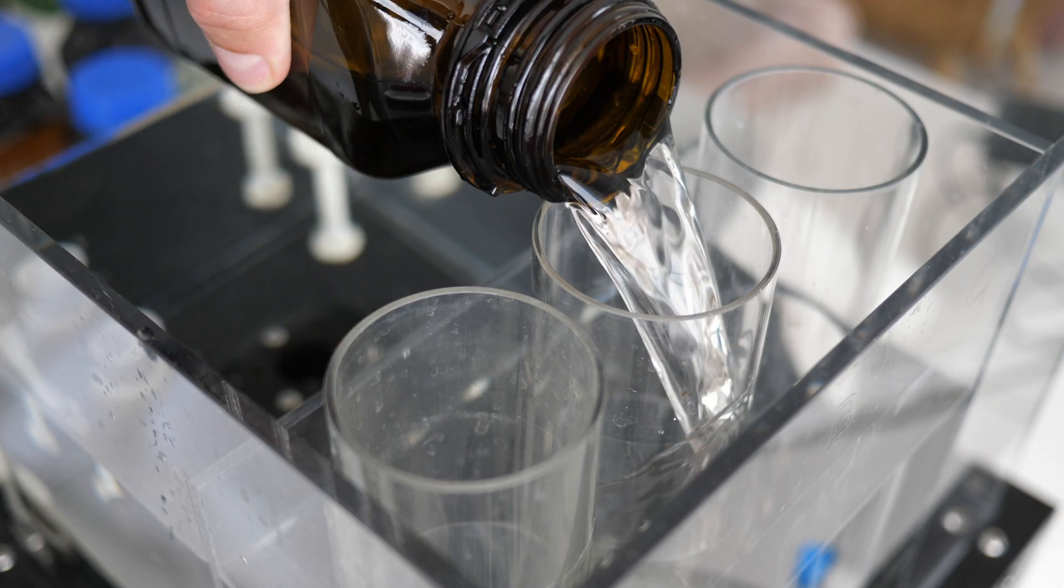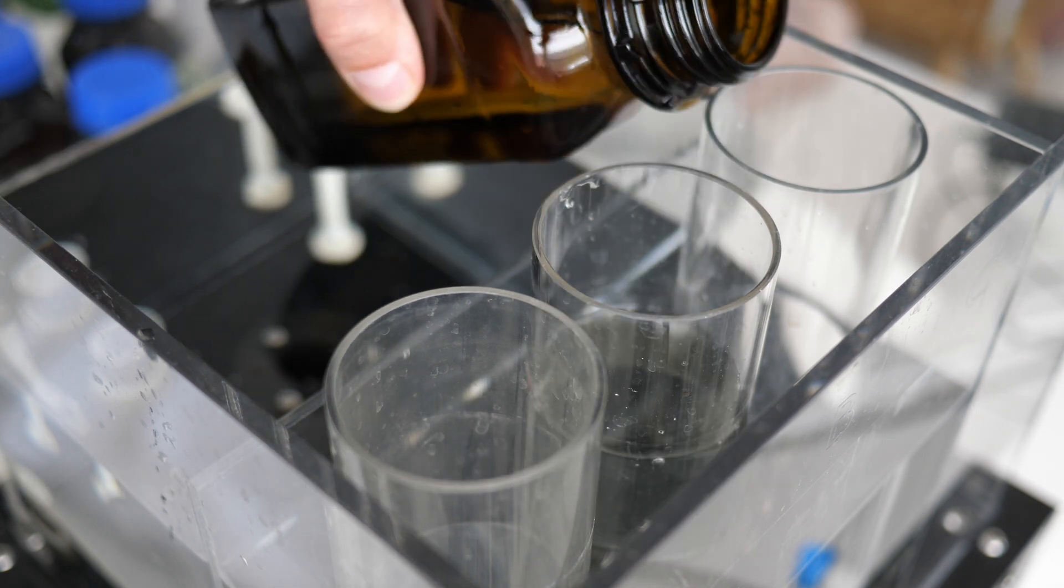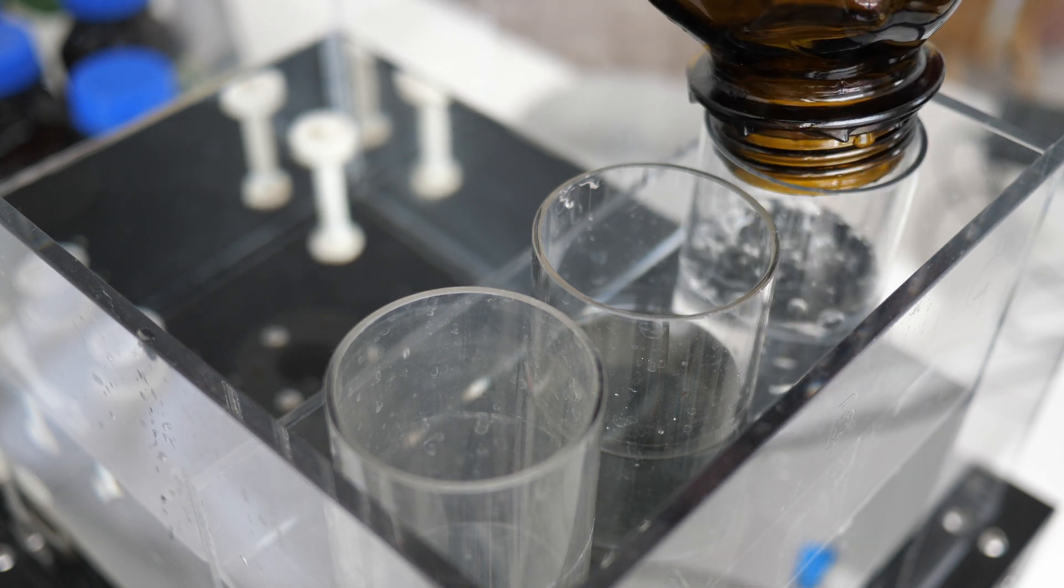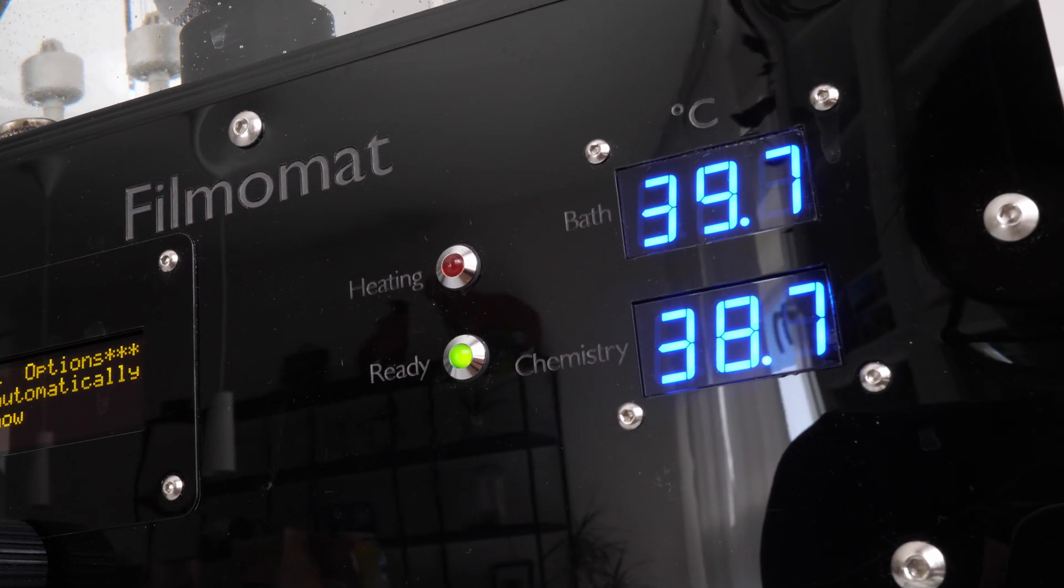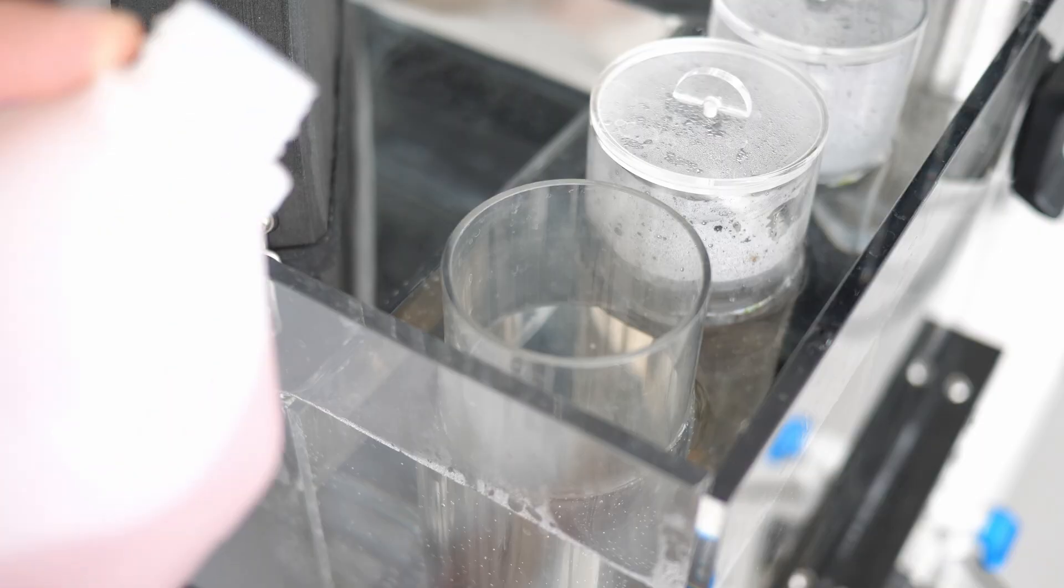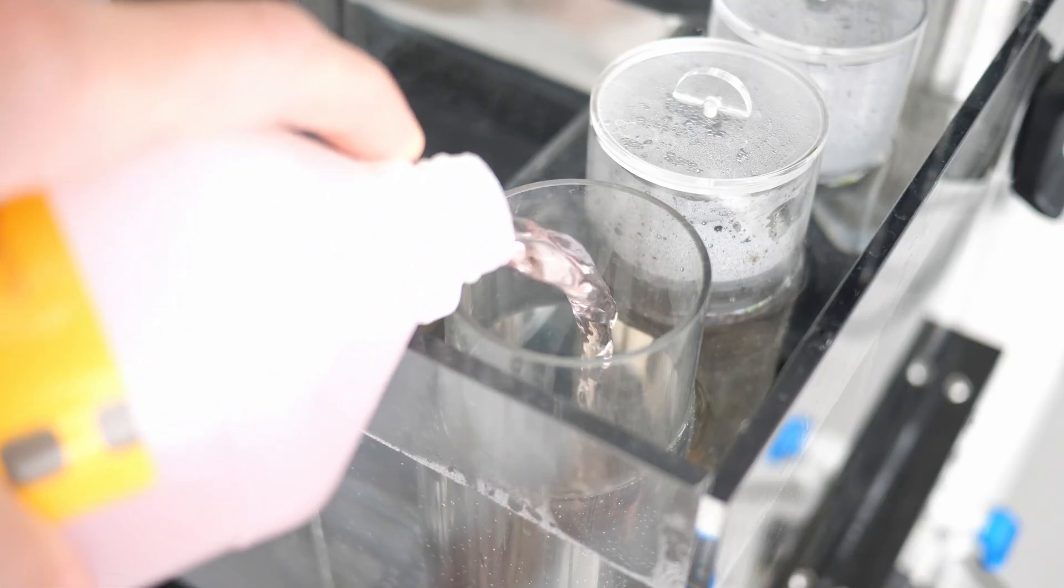Alright, now let's get started. At first, we pour the developer into tank B and a stop bath into tank C. Then, we wait until the chemicals reach 38 degrees. Right before we start the process, we fill the pre-bath into tank A. This way, the pre-bath will remain more or less at room temperature.